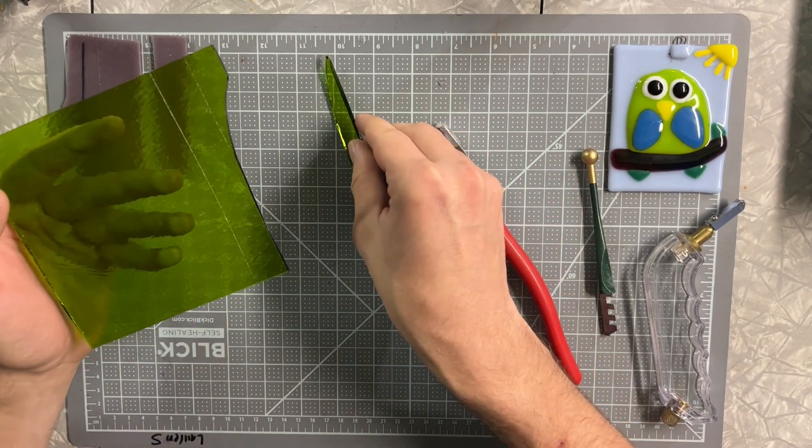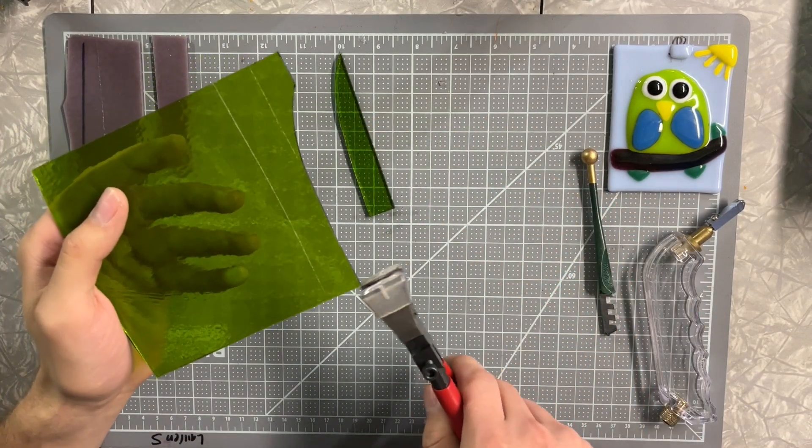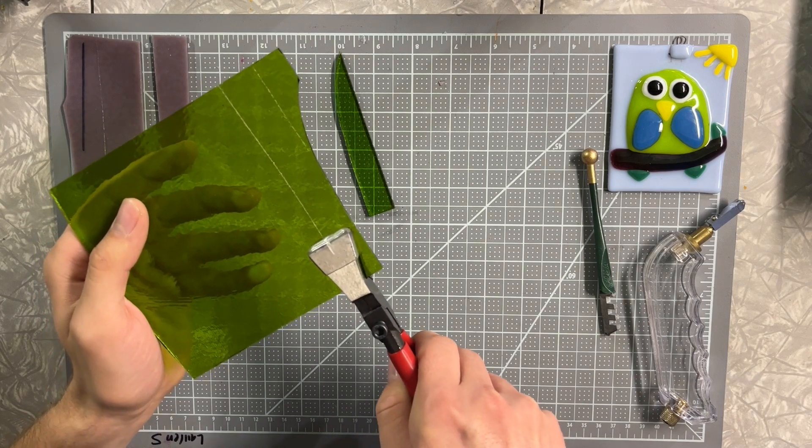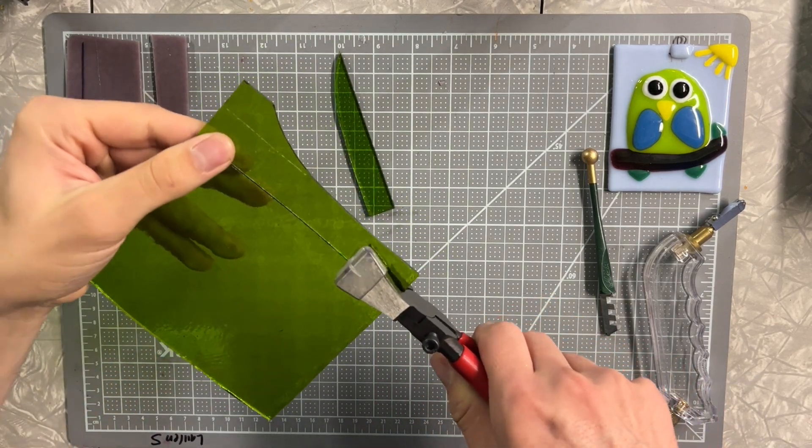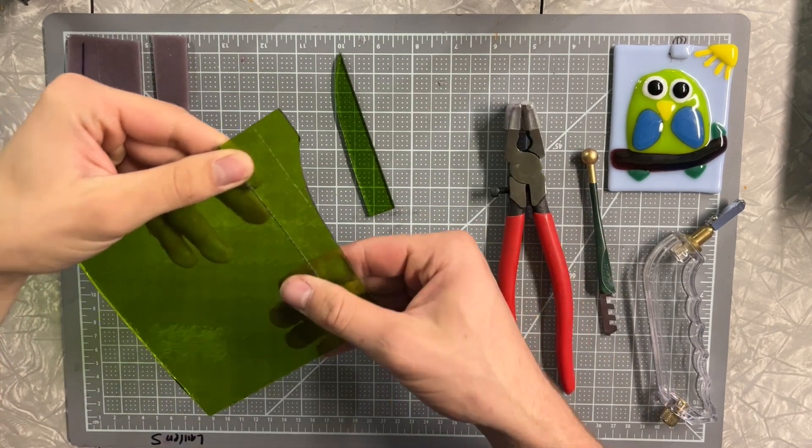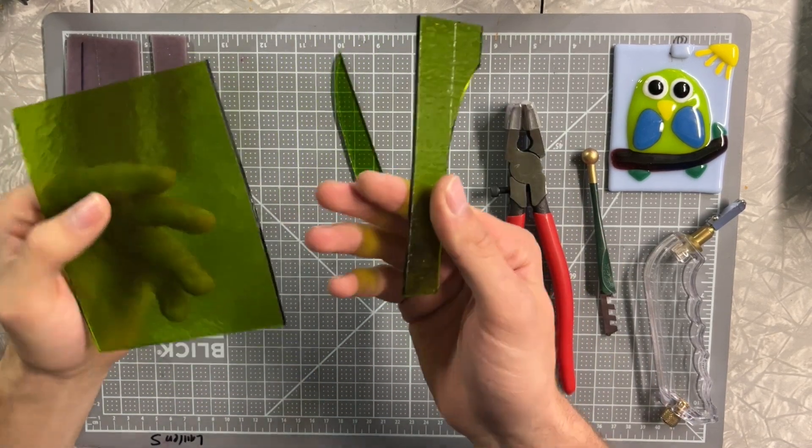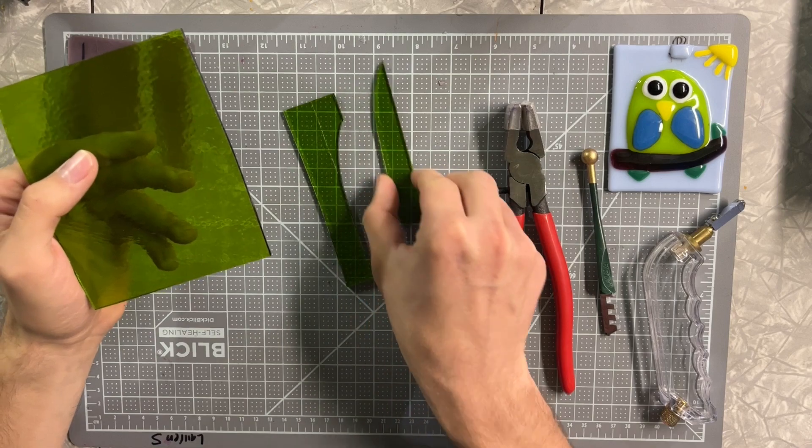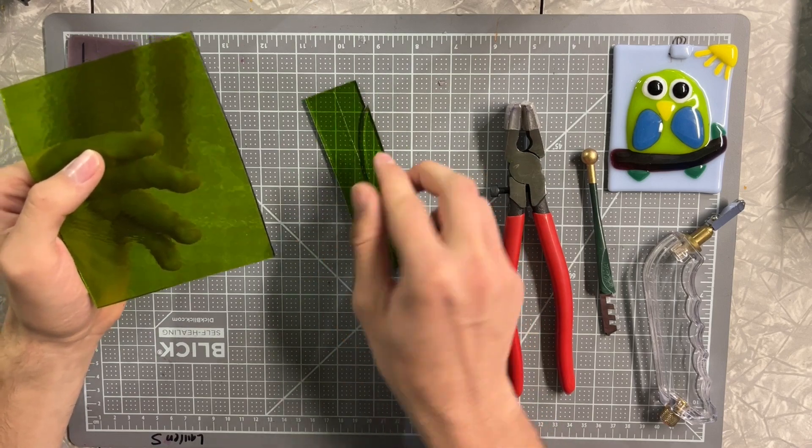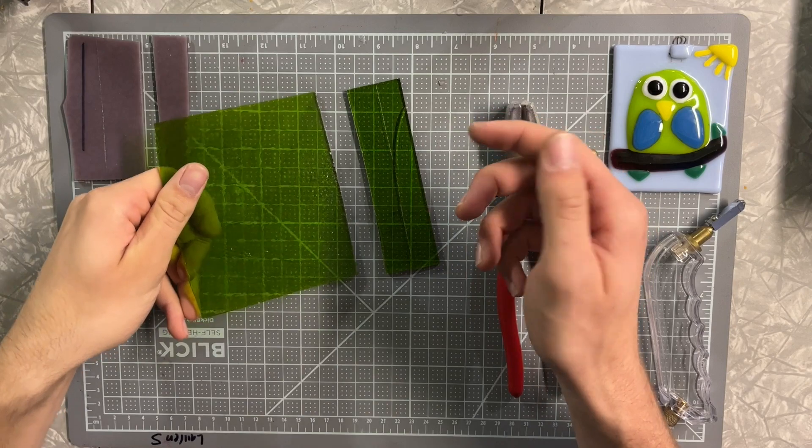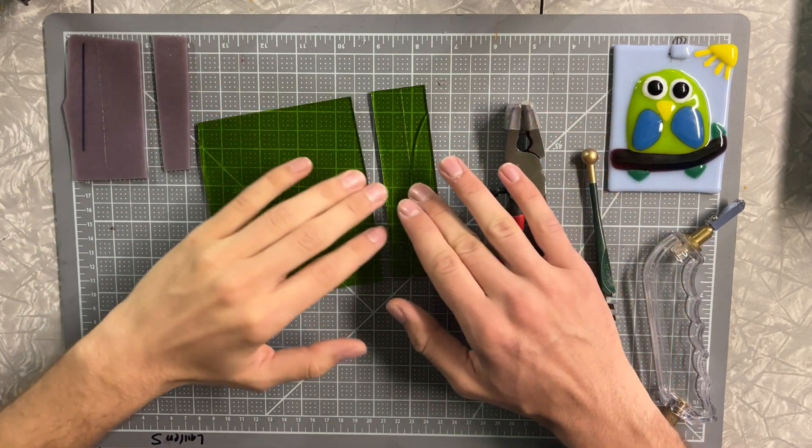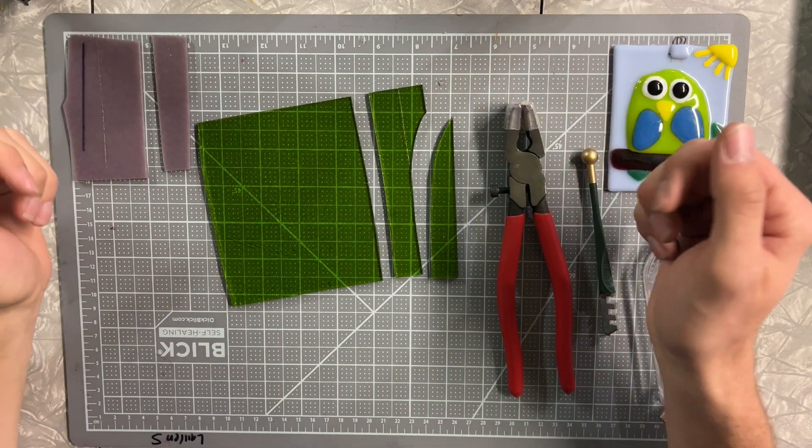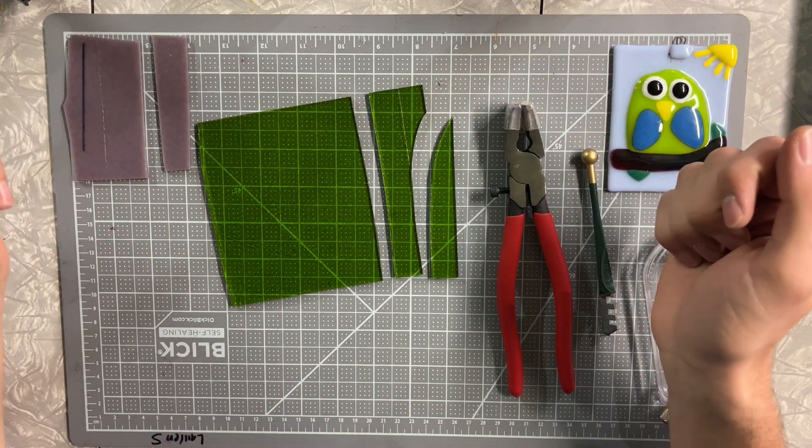Now it didn't break off exactly how I wanted to, and that's okay because it's just going to take some practice. We'll go ahead and break this other piece now that I did with the pistol grip. You can see that one broke perfectly right down my score line. So don't feel upset if you don't get it right away. It does take a little bit of practice to get nice, even, straight lines, but you'll get there eventually.